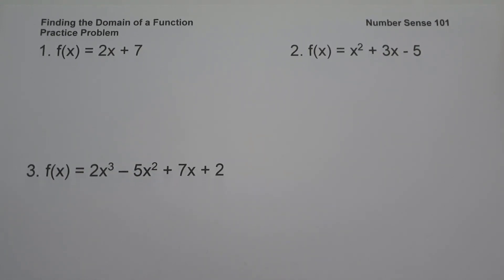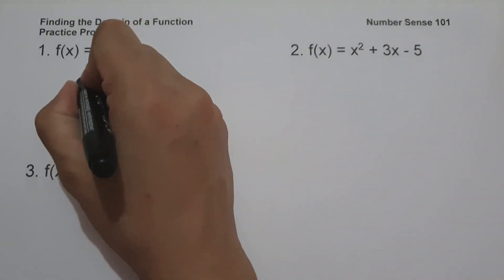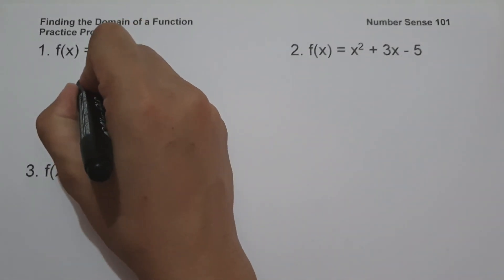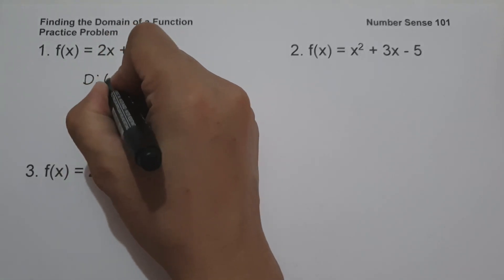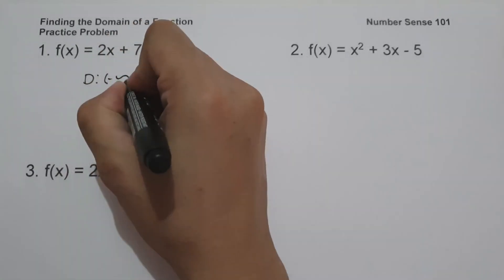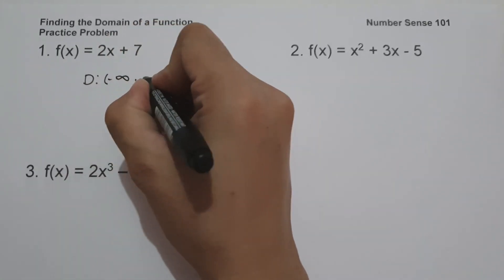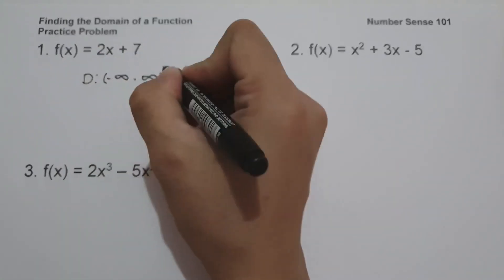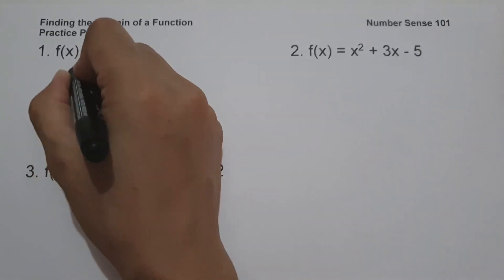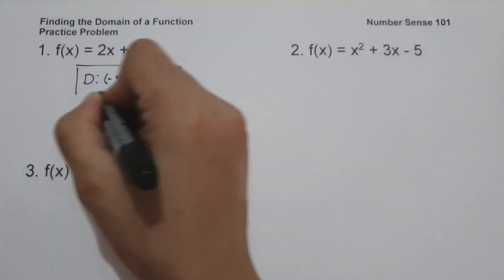Whenever you have a linear function, the domain is always all real numbers. If you are going to write this in interval notation, this will be from negative infinity up to positive infinity, and this will be our answer.